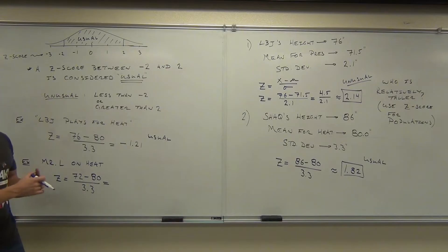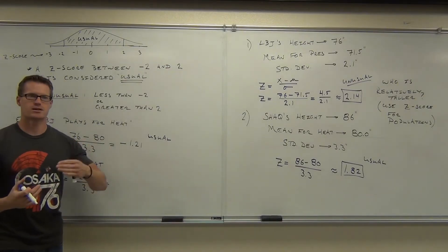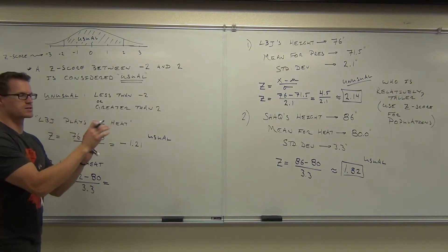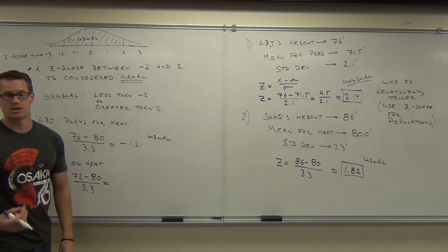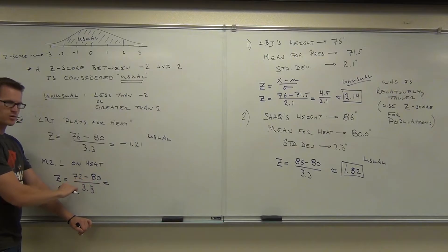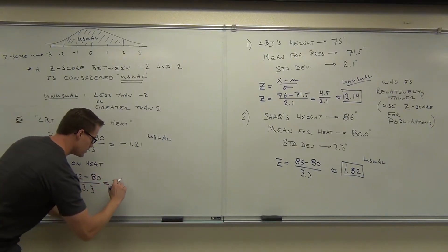And remember, you have to do this in the same order, x minus the mean. All the time, x minus the mean. For populations or samples, it doesn't matter. Take your data value minus the mean for that population. So here we're going to get negative 8 divided by 3.3. You get that as well? Negative 8 divided by 3.3 and you get negative what? Negative 2.2.